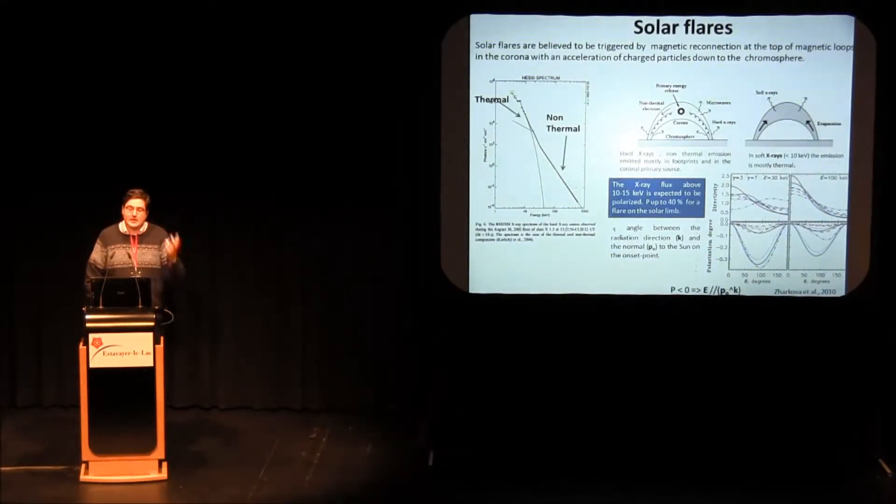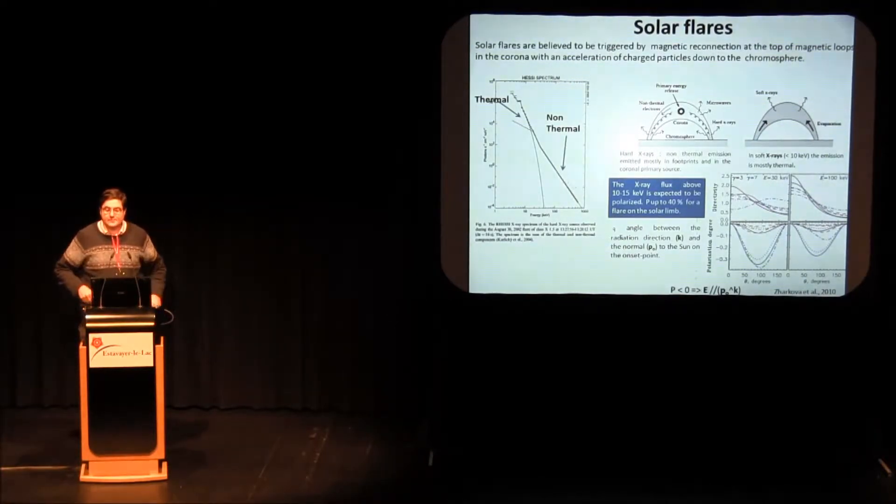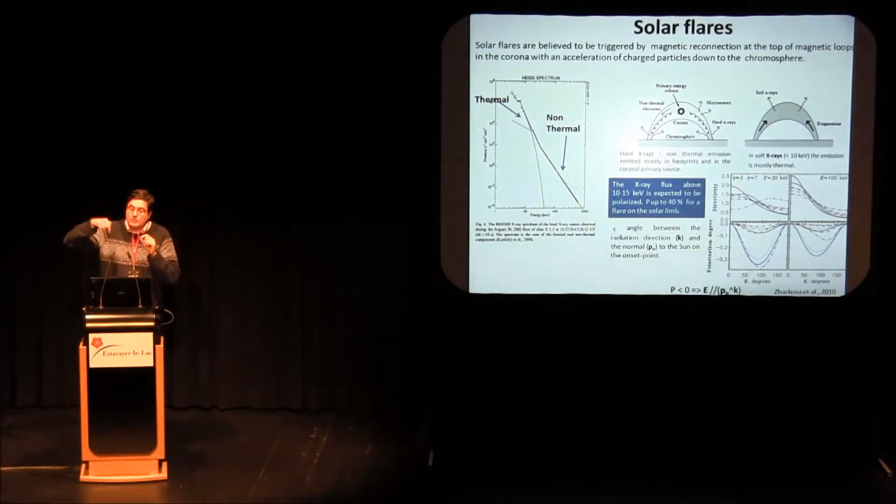The spectrum of a solar flare is actually made of two components: a thermal component below 10-15 keV that is due to the fact that the plasma is heated in the coronal loop and is basically unpolarized, and the non-thermal component is due to the fact that these electrons are accelerated toward the photosphere and produce non-thermal bremsstrahlung that is actually polarized. In fact, the theoretical model says that the degree of polarization that can be reached can be up to 40% when the photons are seen perpendicularly to the normal of the sun on the onset point. That means that when there is the most anisotropy, when the flare happens on the limb of the sun, there is the maximum of the anisotropy and the maximum of polarization.